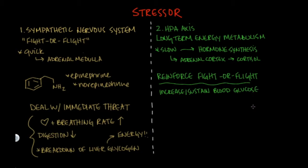The cortisol released from the adrenal cortex does this in two different ways. First, cortisol inhibits the effects of insulin. Insulin is a hormone released after you finish a meal that allows glucose to enter your liver cells to be stored as glycogen. Cortisol opposes glycogen synthesis and keeps glucose in the blood for immediate use by other tissues, which is favorable during a stressful situation.